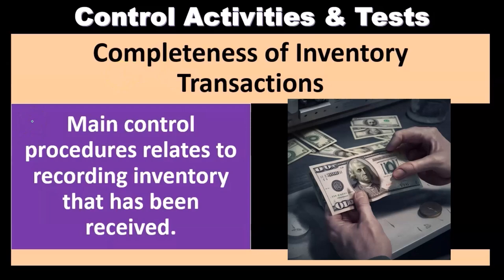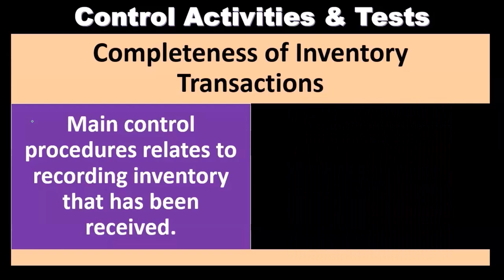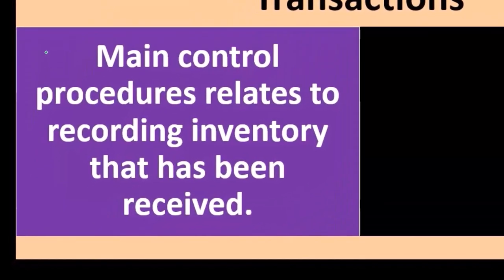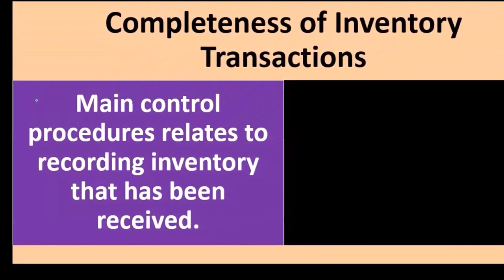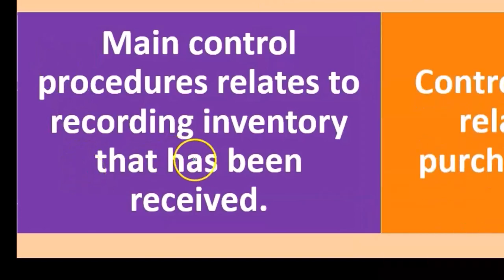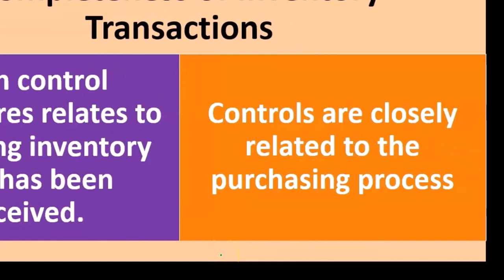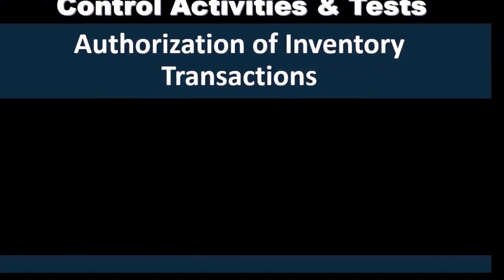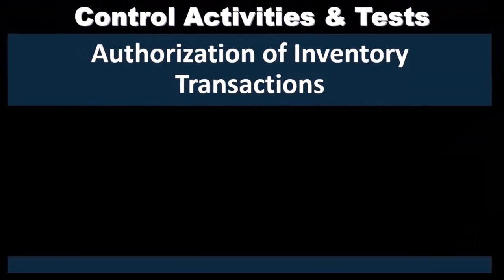Now we're testing inventory transactions with the assertion of completeness. The main control procedures relate to recording inventory that has been received. With completeness, we're asking: have we recorded all the inventory that has been received? Are there inventory items not being recorded or transactions not being processed? This is closely related to the purchasing process, so we'll likely review procedures within the purchasing process with regards to the assertion of completeness — the receiving of inventory and recording that receipt.